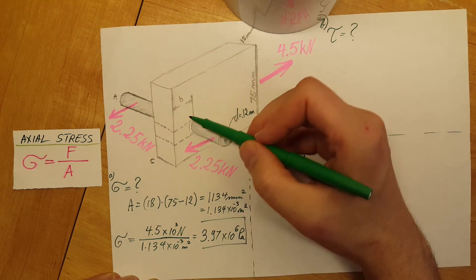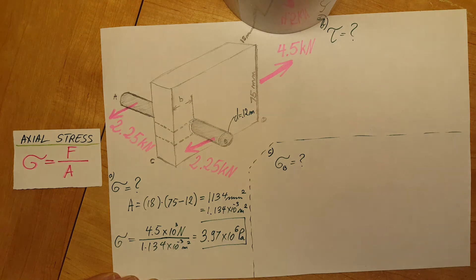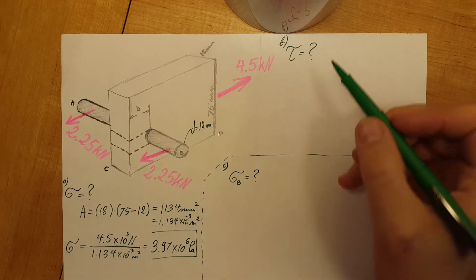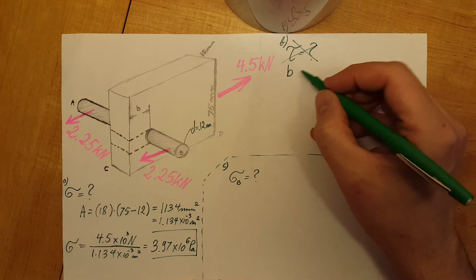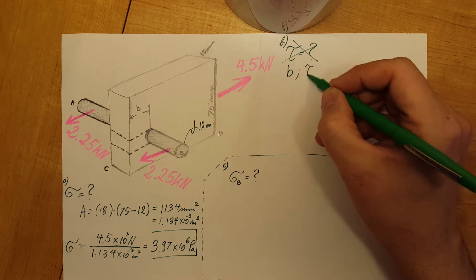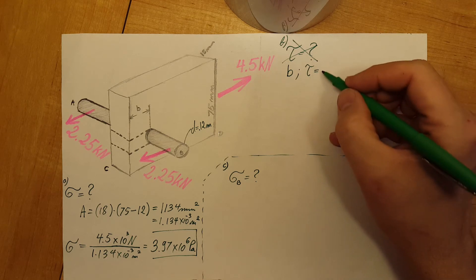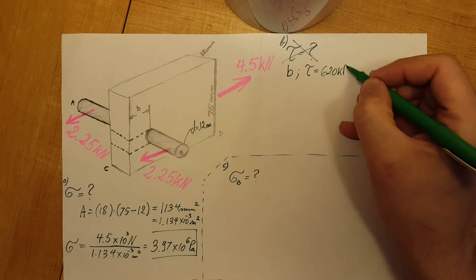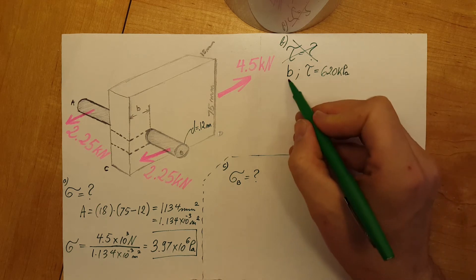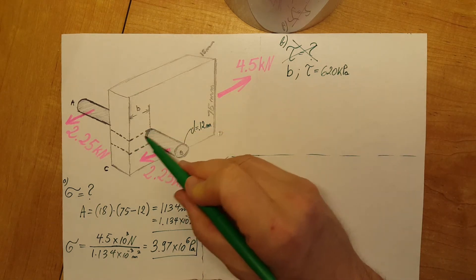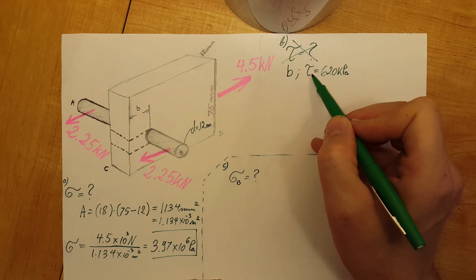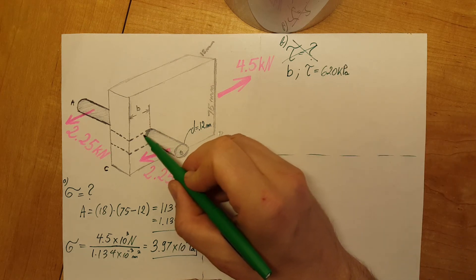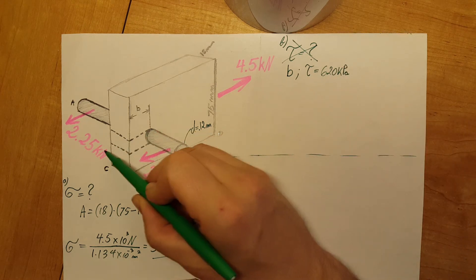Let's go to part B. They want us to find b in such a way that the shearing stress, which is given as 620 kilopascals, will not be exceeded. We are interested in this b, this length, how far away from the edge this rod needs to be in order for us to have a shearing stress of no more than this in the area that they highlighted right here.